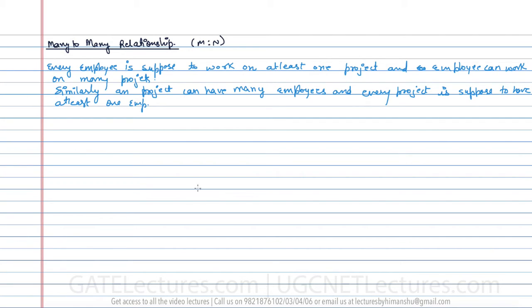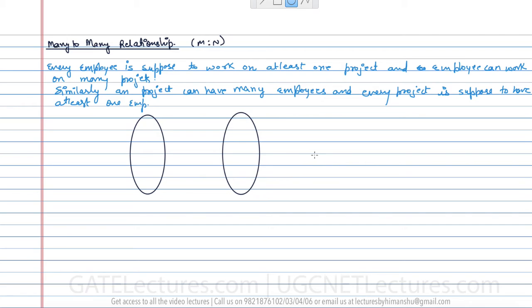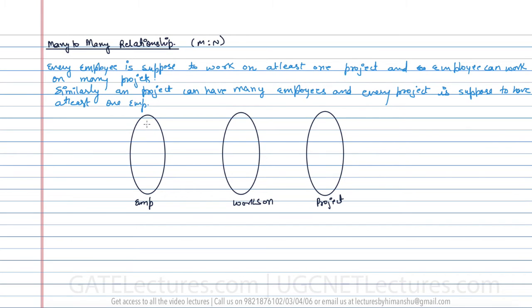You can represent it with this relation diagram. This is representing the employee, this is representing the relation which is 'works on', and this is representing the project.